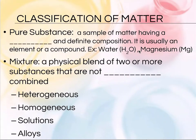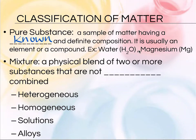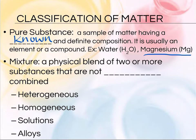But we can break down matter into several different categories. One example is to talk about a pure substance versus a mixture. Pure substances are samples of matter that have a known chemical composition and a definite composition. For example, if it's an element, then it's made of all the same kind of atom, like magnesium has only magnesium atoms in it.